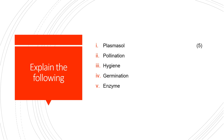The next question is 'Explain the Following.' You should discuss: what is plasma salt, what is pollination, what is hygiene, what is germination, and what is an enzyme. Each carries 1 mark, so write just 1 or 2 lines — a sentence is enough. Look at the marks and write accordingly; you are in 9th standard so write as per the marks given.